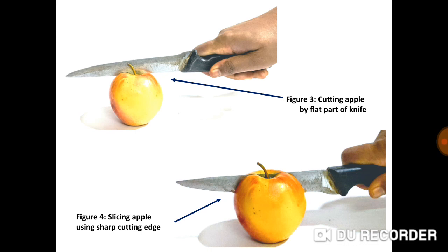For example, in application of force in Figure 3. In this example, a flat part of knife or reverse of the cutting edge was used for slicing or cutting the apple fruit. But you could not cut. Why? The reason is the force applied for cutting or slicing spreads out over a larger area, which results in low pressure. Hence, slicing or cutting of fruit was difficult.